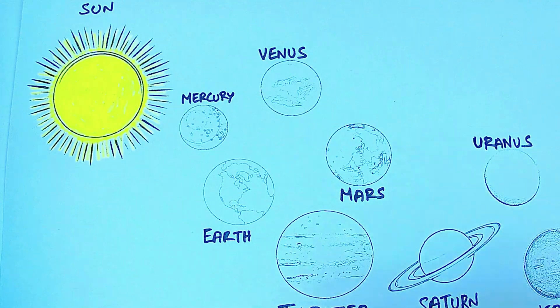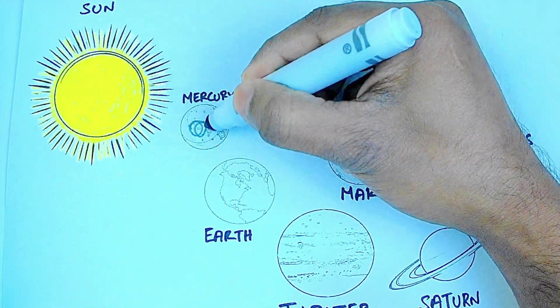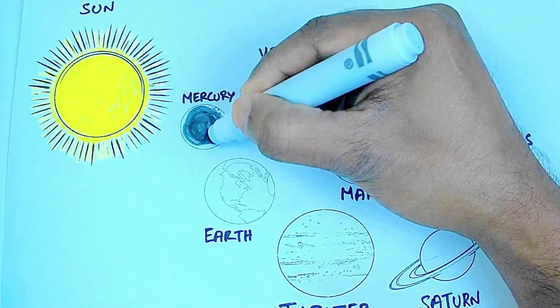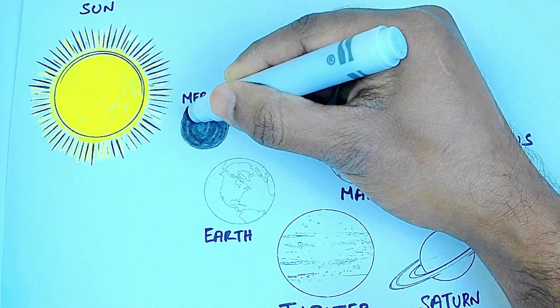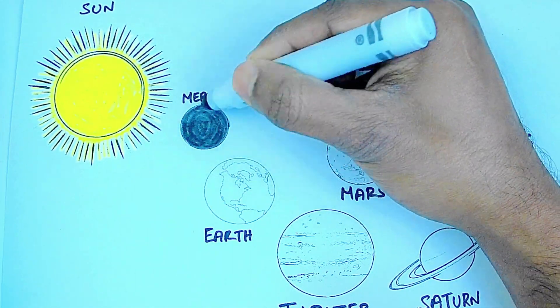Gray color Mercury. It is gray in color. Mercury is the closest planet to the Sun. It has no atmosphere.